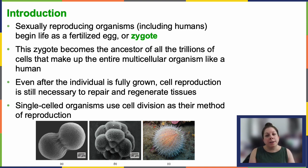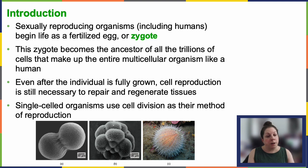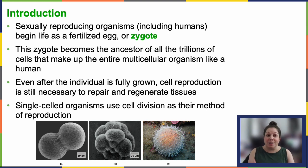In single-celled organisms, this kind of cell division is for reproduction. But in multicellular sexually reproducing organisms, we're going to look at a completely different kind of reproduction, and that's going to be covered in Chapter 7.